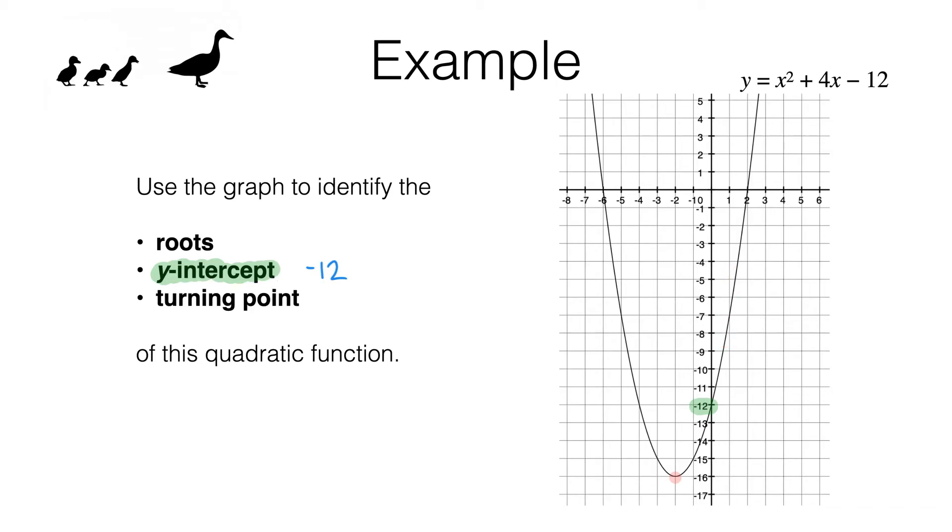Now for a turning point, what we're actually looking for is the coordinates of the point. So we have negative 2, negative 16 as our turning point. I'll just color code this in red to match the diagram, and we can now move on to roots.